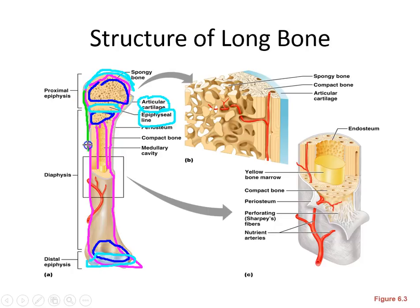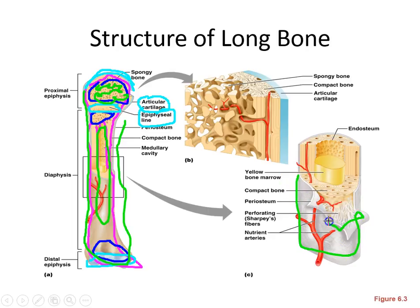Lining the compact bone on the outside and the spongy bone inside, we've got membranous layers. These membranes have our osteogenic cells — the cells that are building bone and breaking bone down. The outside is called your periosteum, which has a fibrous layer and then an osteogenic layer, and it is glued down to the bone by Sharpey's fibers. If you take a bone in lab and pull out the periosteum, you'll be able to see those Sharpey's fibers holding it down.